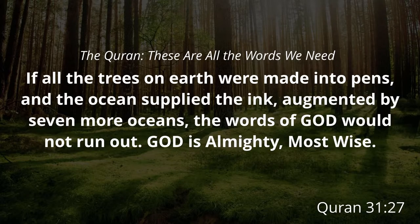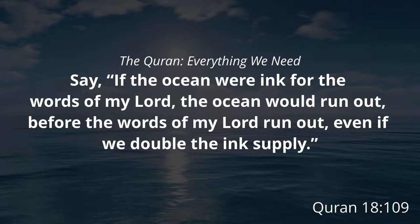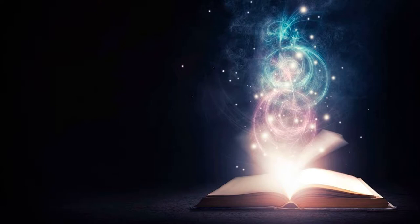In Surah 31 verse 27 it reads: 'If all the trees on earth were made into pens and the ocean supplied the ink, augmented by seven more oceans, the words of God would not run out. God is almighty, most wise.' And in Surah 18 verse 109: 'Say, if the oceans were ink for the words of my Lord, the ocean would run out before the words of my Lord run out, even if we doubled the ink supply.' God is telling us his words are infinite, but he reduced it down to these 114 chapters — all we need for our salvation — yet the depth of understanding of these 114 chapters is infinite.